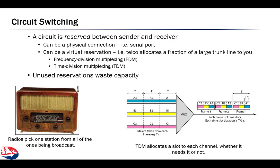Circuit switching allows multiple devices to be active, but only one at a time. A technique called multiplexing takes multiple streams of data and encodes them as one, then reverses the process on the receiving side. The two most common techniques are frequency division multiplexing (FDM) and time division multiplexing (TDM). FDM allocates different frequencies to each channel so each can send data simultaneously — like radio or television stations broadcasting at the same time. However, physical limits restrict how much data can be sent per channel, and channels must be spaced far enough apart to avoid interference.